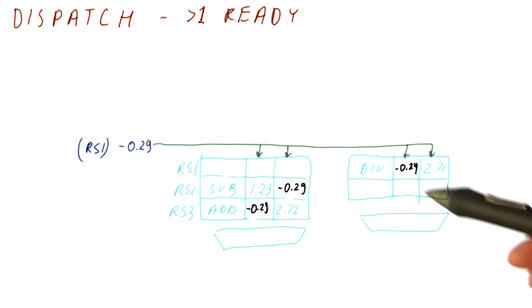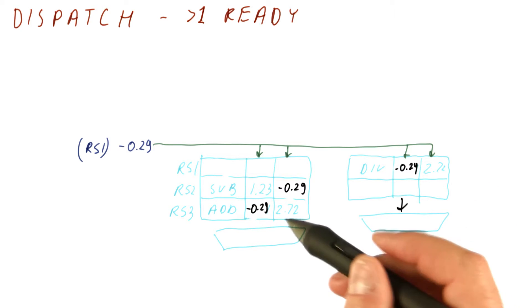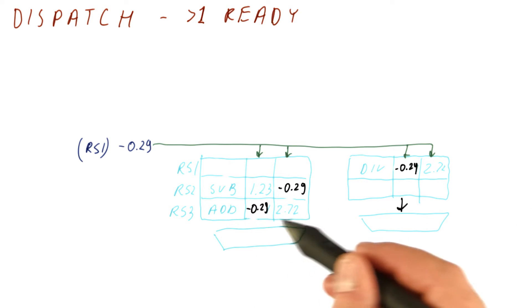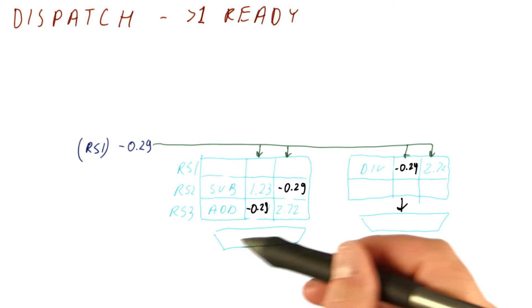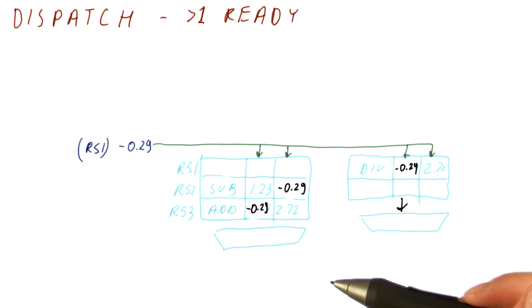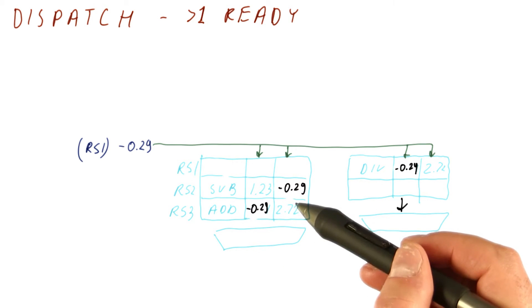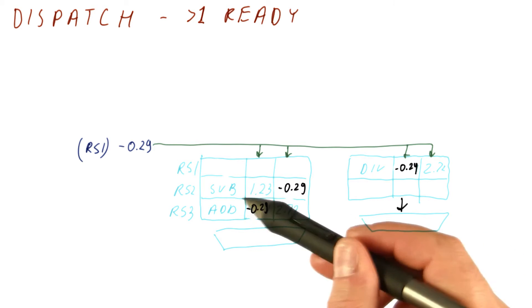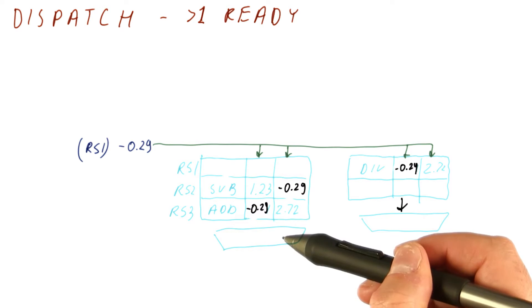But now we have a situation where for the multiplication and divide unit it's pretty clear that this is the instruction that gets to execute. But here we need to choose between one of these two, assuming the adder can only handle one instruction per cycle. We need to pick one of these. Now we have to figure out which one. There needs to be some logic that's going to pick one of these instructions because both of them cannot go.